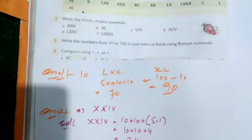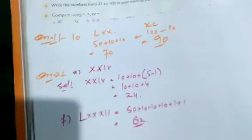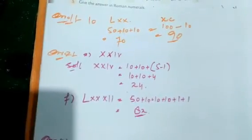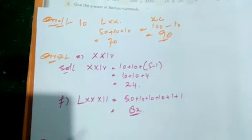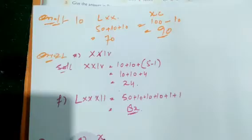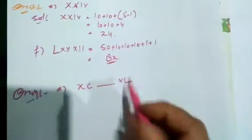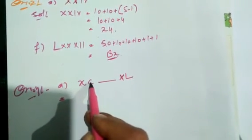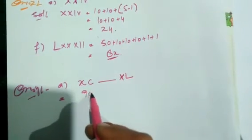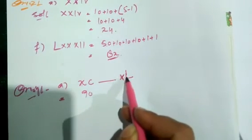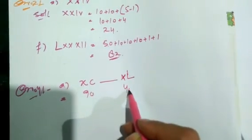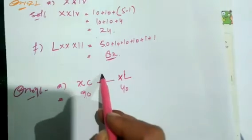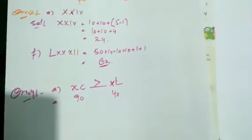Question number 4: compare using less than, greater than, or equal. For the first part, XC and XL. XC means C is 100 minus X is 10, equals 90. XL means L is 50 minus X is 10, equals 40. Comparing them, 90 is greater than 40, so the symbol is greater than.